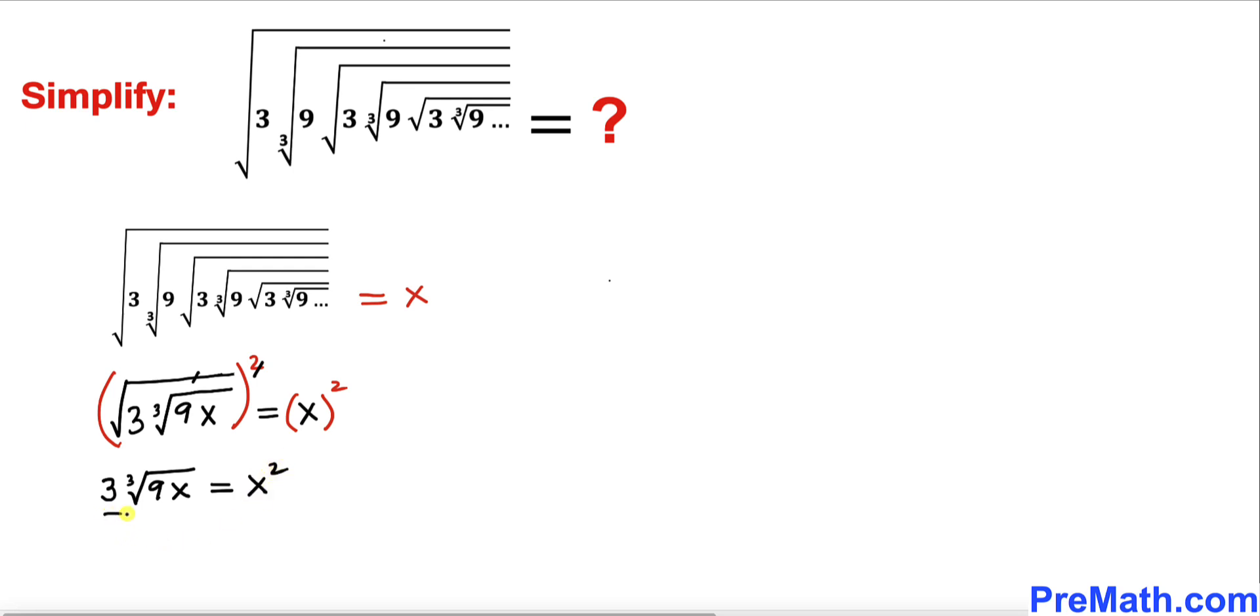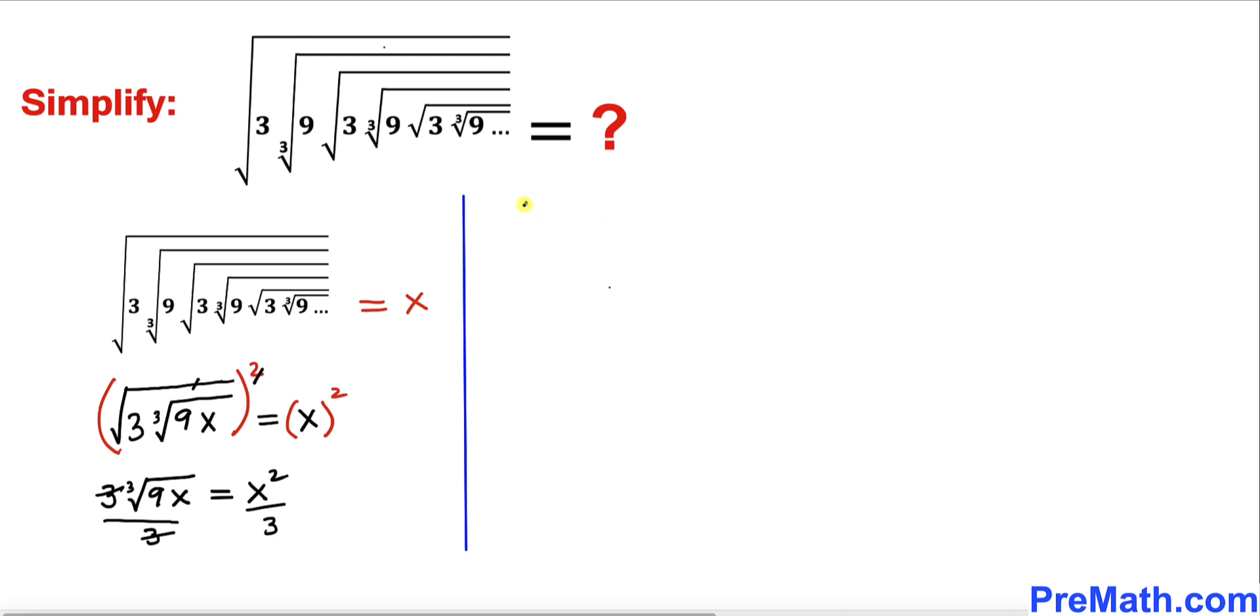Now let's go ahead and divide both sides by 3. This 3 and 3 cancels out. So therefore we end up on the left hand side with the cube root of 9x equals x squared divided by 3 on the right hand side.